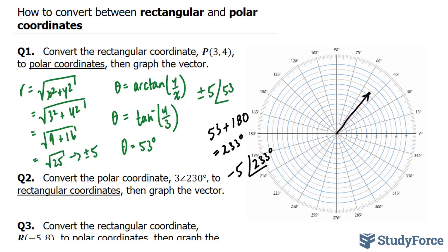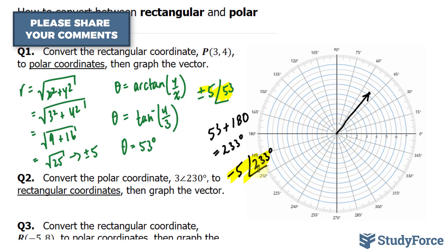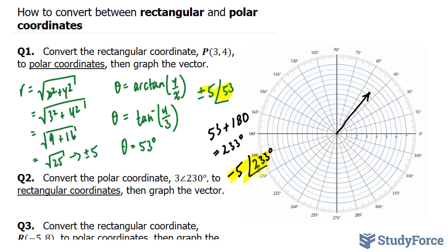Therefore, our two answers that represent point P is positive 5 at an angle of 53 degrees and negative 5 at an angle of 233 degrees. That's the answer to question 1. To find the solution to question 2 and 3, make sure to watch part 2 of this series.